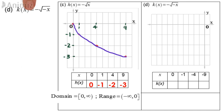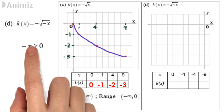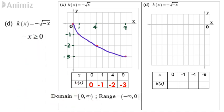D, sketch negative square root of negative x. This function is defined for negative x greater or equal to 0. This implies x is always equal to 0 or less than 0. We can pick a few x values that satisfy this range.